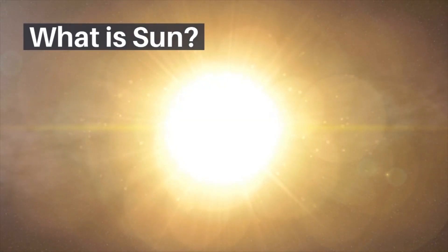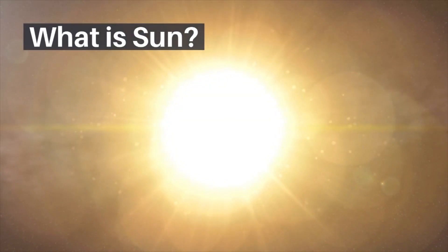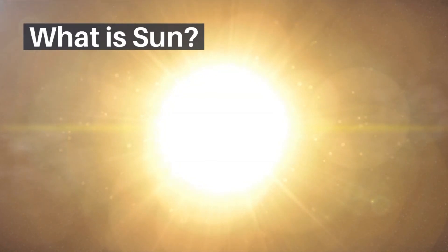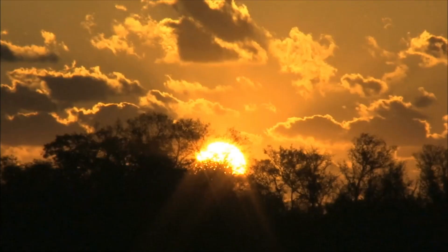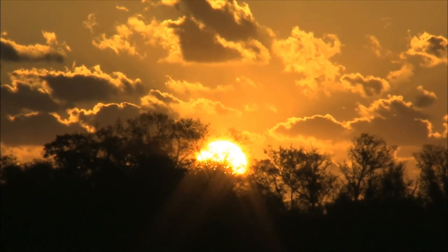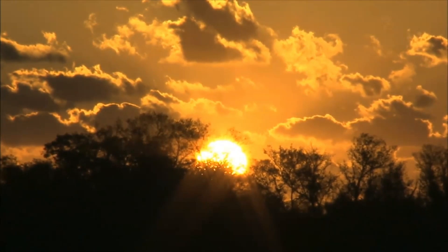The Sun is a yellow dwarf star, a hot ball of glowing gases at the heart of our solar system. Its gravity holds the solar system together, keeping everything from the biggest planets to the smallest particles of debris in its orbit.